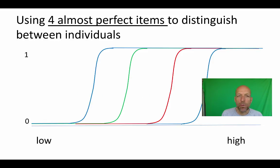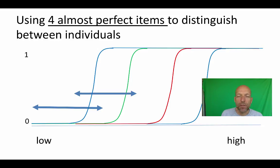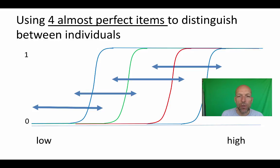Here is an example with four almost perfect items to distinguish between individuals. The groups we can now distinguish on the latent trait, based on their answering pattern, are presented by the arrows here. There is still overlap, but we can make more subtle distinctions.